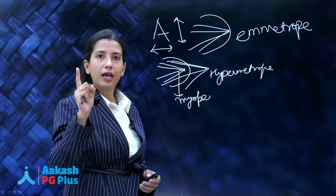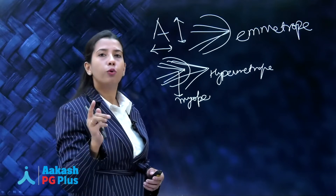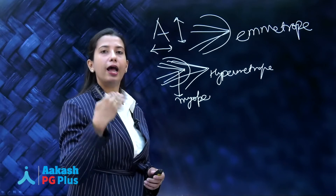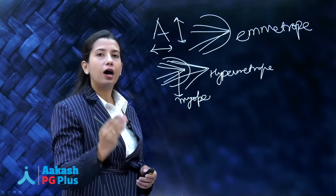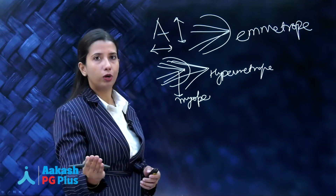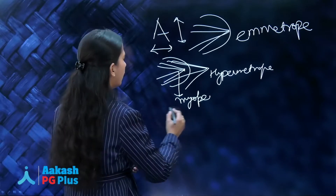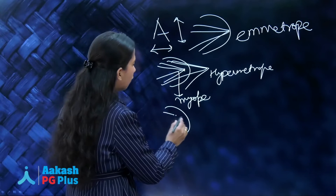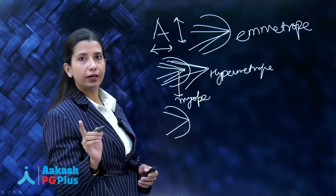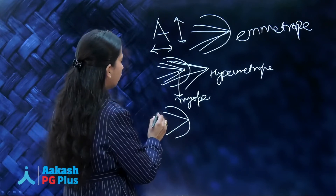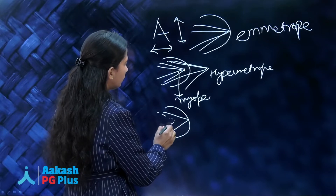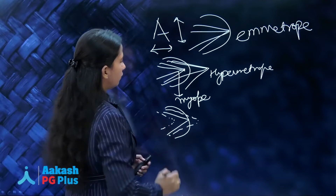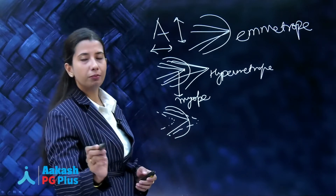What is astigmatism? Astigmatism means that both bundles of rays coming from the horizontal and vertical meridian are focusing at different points. Simple astigmatism means one of the bundles is focusing on the retina but the other one is not — the other one is either focusing in front or focusing behind. That is simple astigmatism.